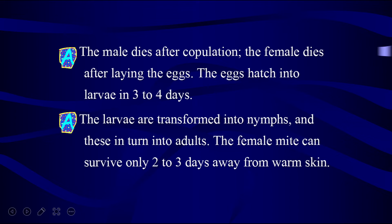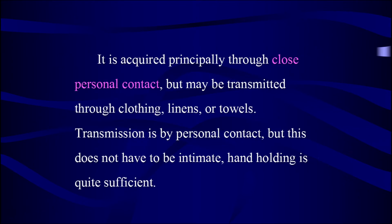The eggs hatch into larvae in three to four days. The larvae are transformed into nymphs, and these in turn into adults. The female mite can survive only two to three days away from warm skin. It is acquired principally through close personal contact, but may be transmitted through clothing, linens, or towels.